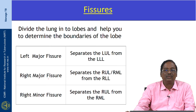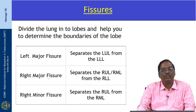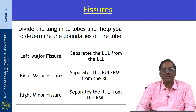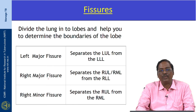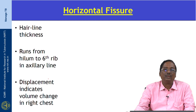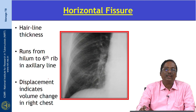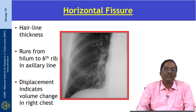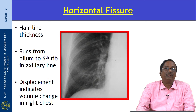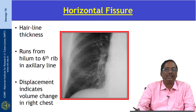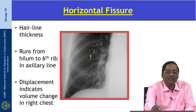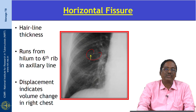Coming to the fissures — fissures divide the lung into lobes and help determine the boundaries of the lobes. The left major fissure separates the left upper lobe from the left lower lobe. The right major fissure separates the right upper, middle, and lower lobes, and the right minor fissure separates the right upper lobe from the right middle lobe. The horizontal fissure looks like a hairline in the PA view and is visible in the frontal view because it is tangential to the X-ray beam. It runs from the hilum to the sixth rib in the axillary line. Displacement of the fissure indicates a volume change on the right side.